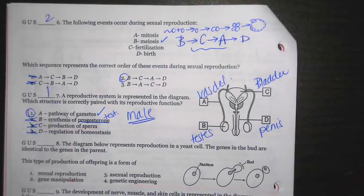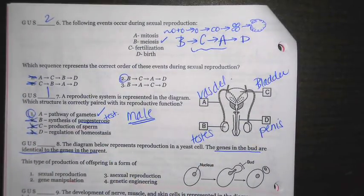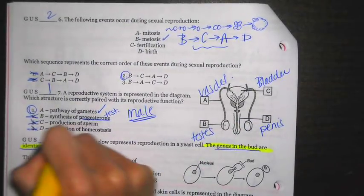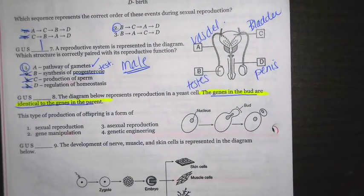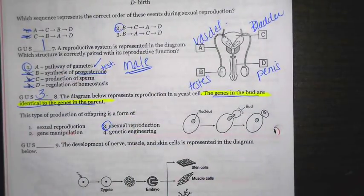Eight. The diagram below represents reproduction in yeast. The genes in the bud are identical to the genes in the parent. So really important statement there. The offspring and the parent are going to be identical. This type of production of offspring is a form of, so it says they're going to be identical. When they're identical, we're talking about asexual reproduction.